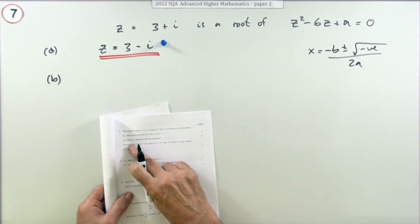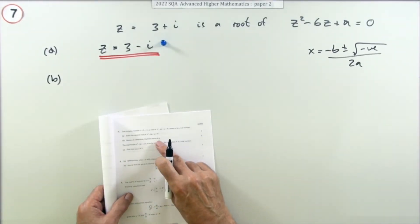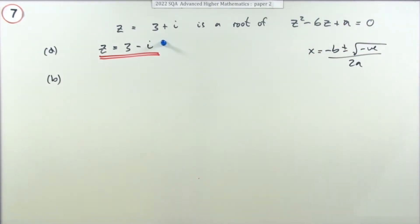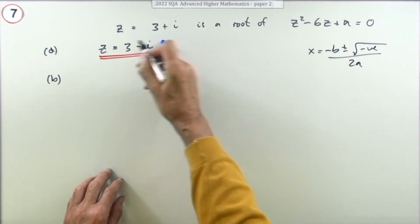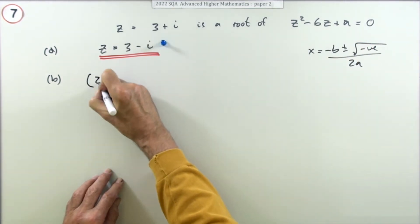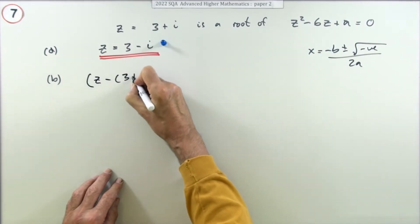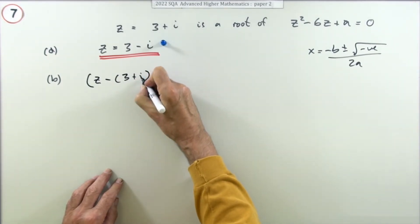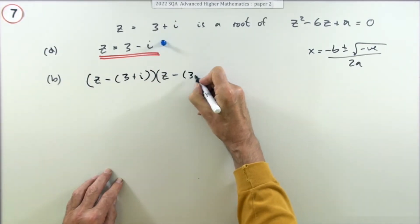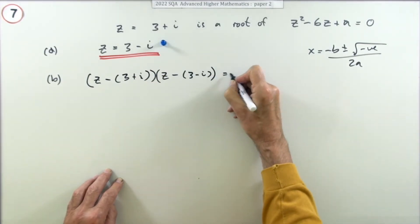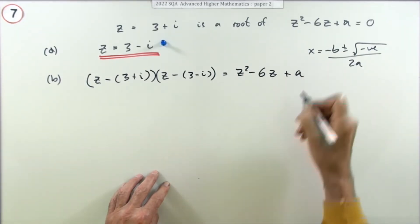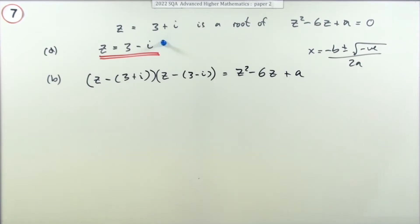Part b, hence or otherwise find the value of a. There's an unknown a in this equation. Well, if you were to reconstruct this from those roots, you'd have these factors: you'd have z minus that one, and they would form the z squared minus 6z plus a. Now you can just look at the corresponding terms.